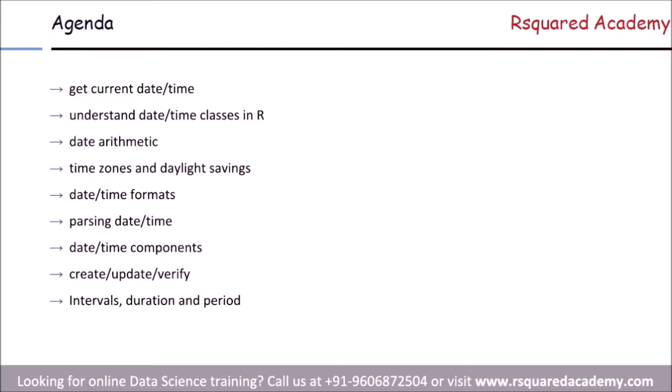In the second module we'll understand date and time classes in R — that is, how does R store date and time. We'll look at three different classes and how R internally stores date and time. From there, we look at date arithmetic: how you can add and subtract dates, how you can update or change different components of your date or time. In the fourth module we'll spend time understanding time zones and daylight savings.